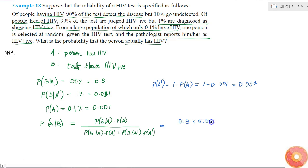So now I have all the values. If I substitute them, I will get 0.9 times 0.001 divided by 0.9 times 0.001 plus 0.01 times 0.999.